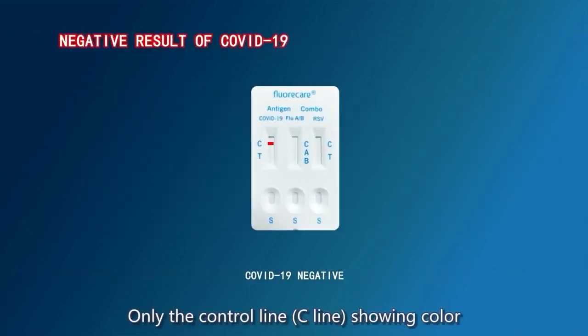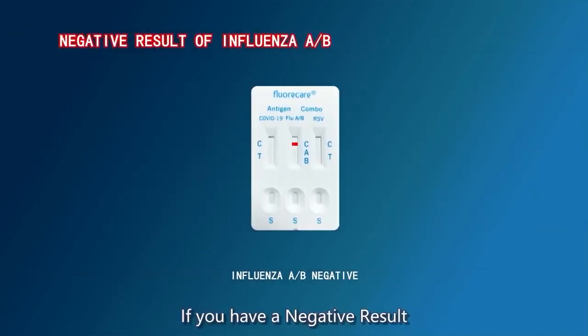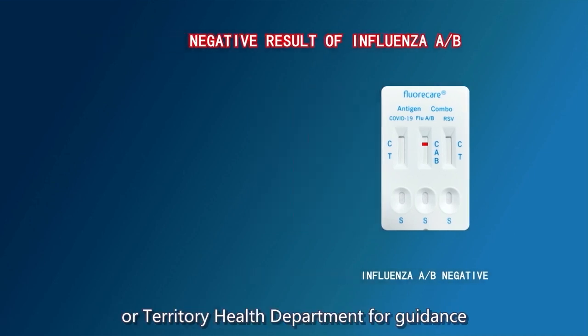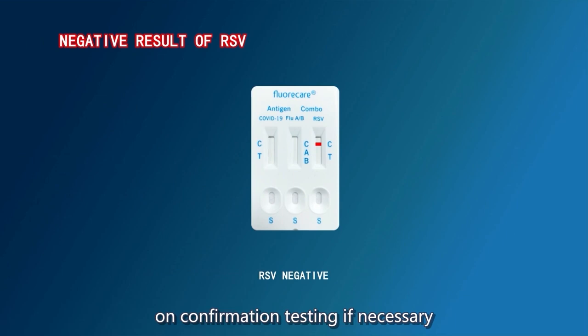Only the control line (C line) showing color means the test result is negative. If you have a negative result, follow the guidance from your local state or territory health department for guidance on confirmation testing if necessary, and if unwell, seek medical assistance.